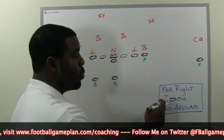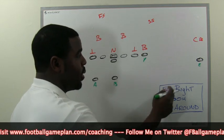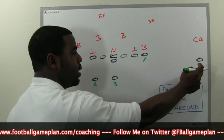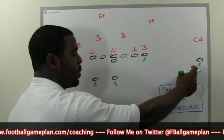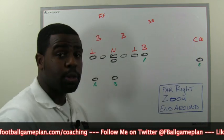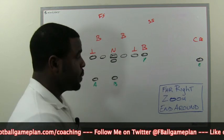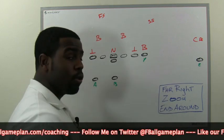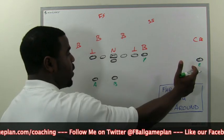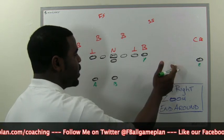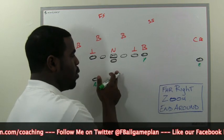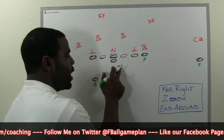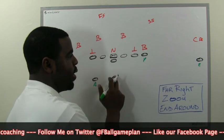Zoom is telling you the motion of the Z receiver. We're going to do a sprint — just running across like on those jet sweeps. We're going to call this a Zoom, just a slow motion coming across the formation. We're going to hand him the ball right here.